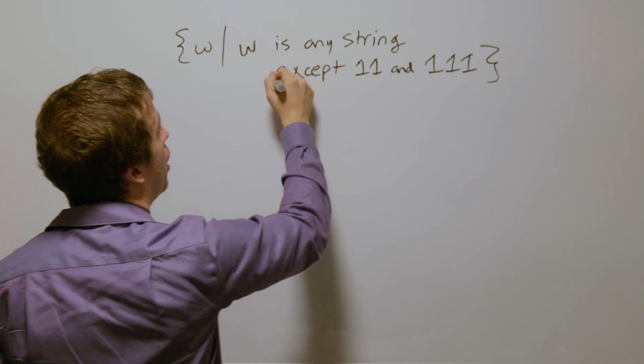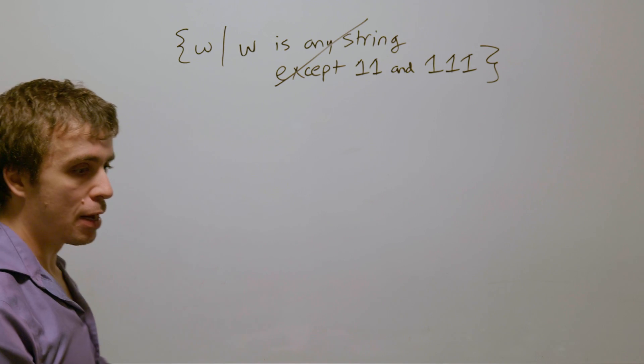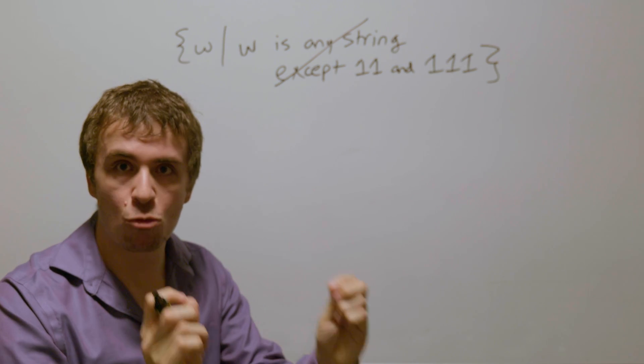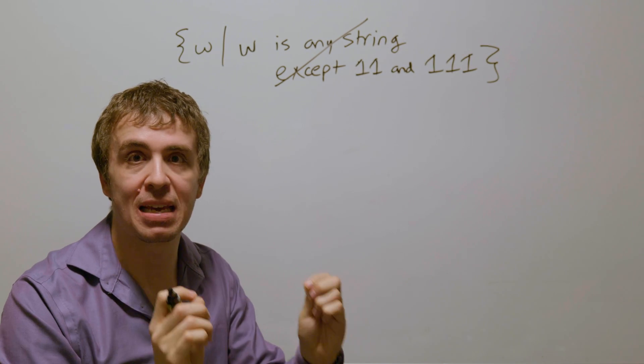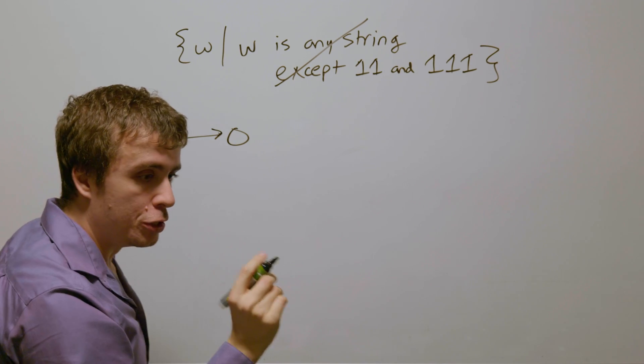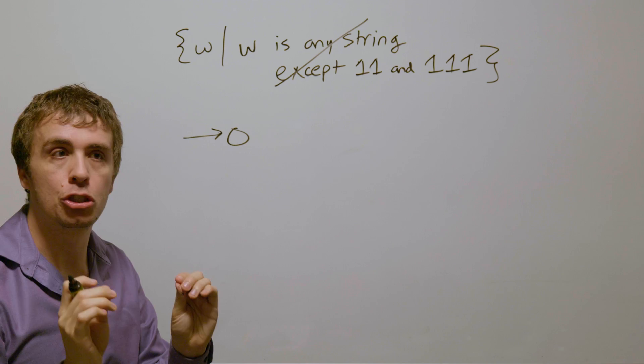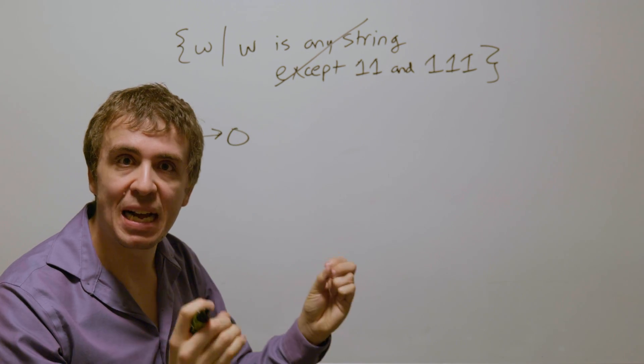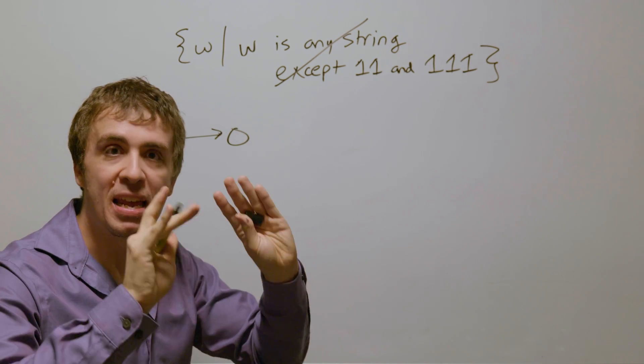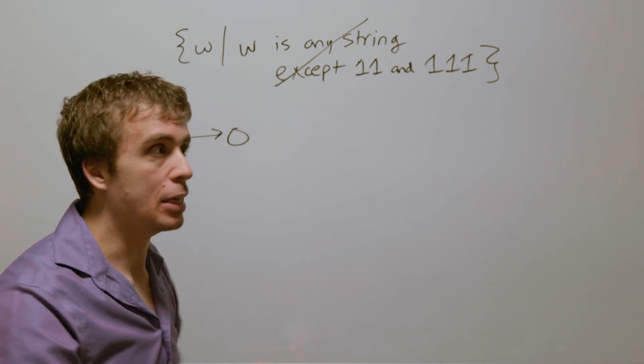So let's focus on the opposite condition of it being exactly 11 or exactly 111. What we should do to solve that problem is make the transitions that solve the string being exactly two ones or three ones and add the other transitions later.